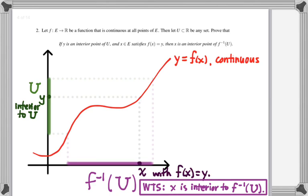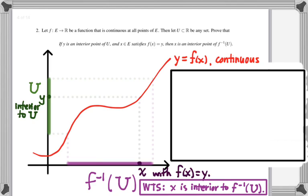So this is really going to be an exercise in unpacking two different definitions. The definition of interior point and the limit definition for a continuous function and figuring out how they all fit together in the proof. Starting with the definition of interior point. Remember,